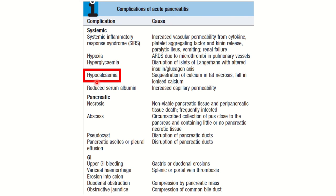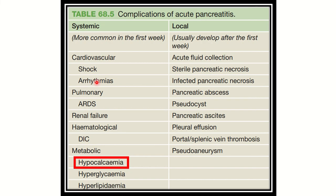In another reference box collected from Bailey and Love, we can see the complications of acute pancreatitis in Table 68.5. The complications are divided into systemic and local categories.